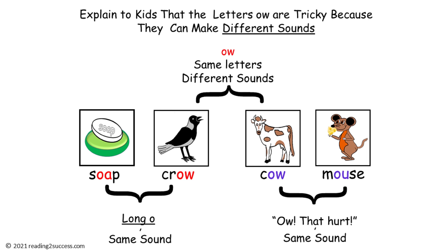Parents, welcome to Teaching Kids Tricky Letters: O-W. They appear in many words. They look the same, but they can make different sounds. The O-W in Crow makes the same sound as the O-A in Soap, and the O-W in Cow makes the same sound as the O-U in Mouse.